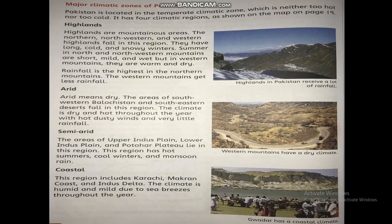Major climatic zones of Pakistan: Pakistan is located in the temperate climatic zone, which is neither too hot nor too cold. It has four climatic regions: Highlands, Arid, Semi-arid, and Coastal.